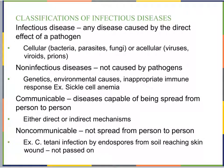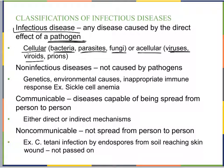An infectious disease is any disease caused by the direct effect of a pathogen — any microorganism that can cause disease. These can be cellular pathogens like bacteria, parasites, and fungi, or acellular pathogens like viruses, viroids, and prions. Even prions are considered pathogens that can cause infectious disease.